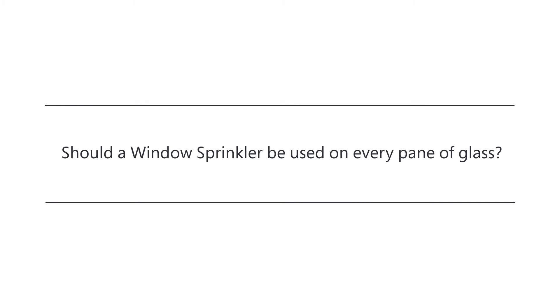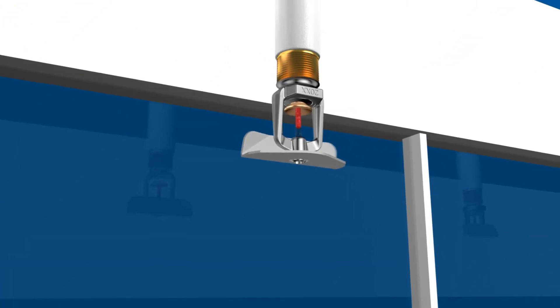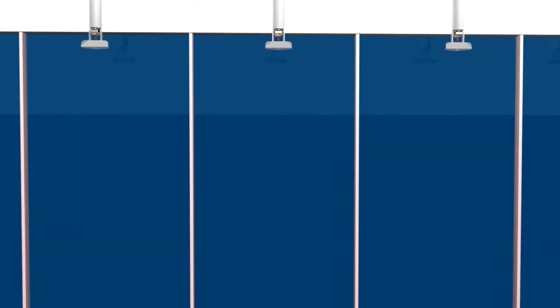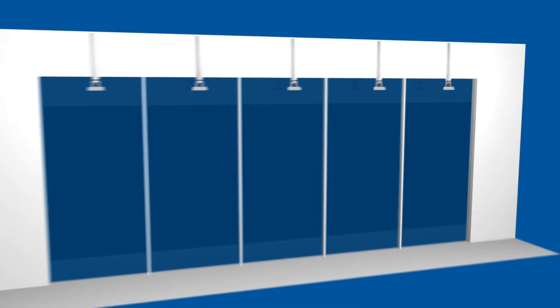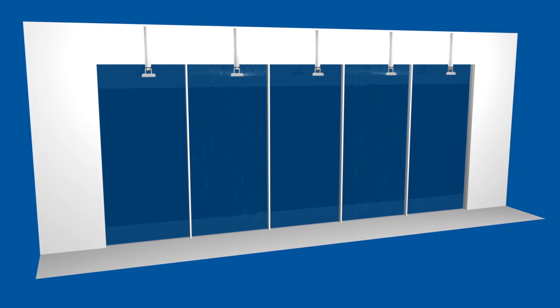Should a window sprinkler be used on every pane of glass? A window sprinkler is intended to be installed on each pane of glass if the pane is separated by a vertical mullion. The sprinkler's water distribution will stay within the vertical barriers and provide protection to that window only.